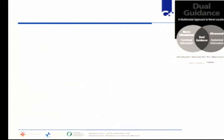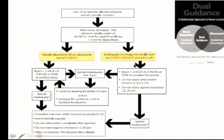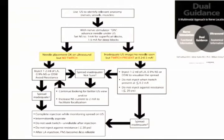About five years before, there was a publication from B. Braun regarding dual guidance, produced by Admir Hasic and colleagues. This publication demonstrated a clear pathway for how we should use this technology. The idea is to use ultrasound to identify relevant anatomy and place a needle at a close endpoint, then set the nerve stimulator to 1 milliamp for superficial blocks and 1.5 milliamps for deep blocks.